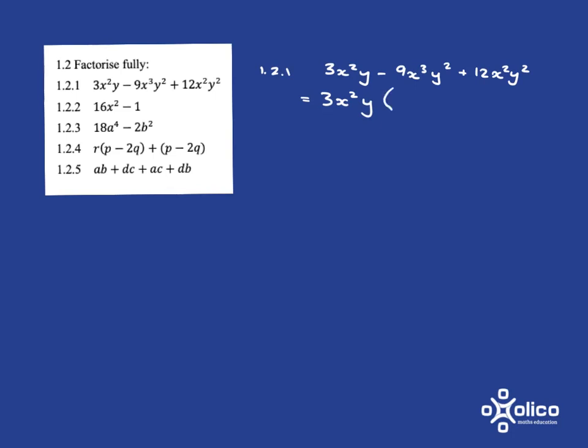Alright, so then looking at what's left from here, I've taken out a 3, taken out an x squared, taken out a y, so I just need to put a 1 in, because 3x²y times 1 gives me 3x²y. Alright, now focusing here, I've taken out a 3, so I've got a minus 3, because minus 3 times 3 gives me minus 9. From the x cubed, I've taken out an x squared, so I've got x left. From the y squared, I've taken out a y, so I've got y left.